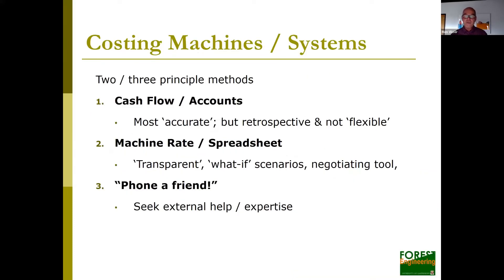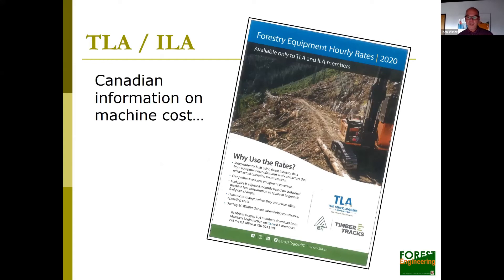There are three main costing methods. First, cash flow — which requires you to dig into your accounts and work with your accountant. Very accurate but retrospective and not that flexible. Second, the machine rate or spreadsheet approach, which is most common and very useful for a negotiating process. Third, what I'm calling 'phone a friend' — it could be a trusted person within the forestry company, or external help and expertise. For example, British Columbia has put considerable effort into logging cost guidance, providing detail to help loggers and companies negotiate rates and evaluate equipment — including fuel price adjustments.